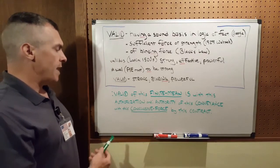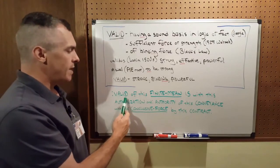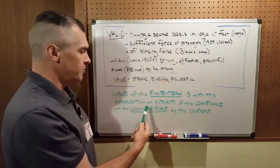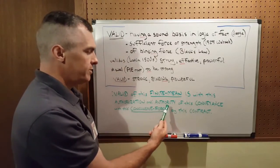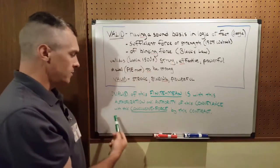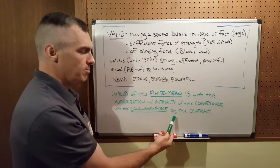And my definition of valid is: for the valid of this finite mean is, with this authorization and with this authority of this conveyance, with this conclusive force, by this contract.